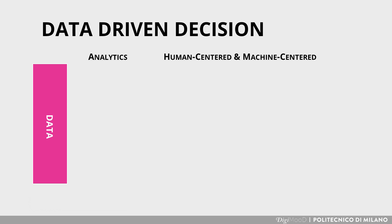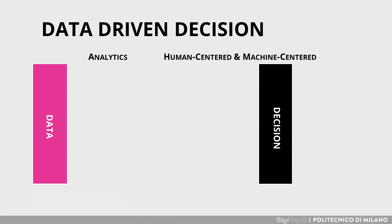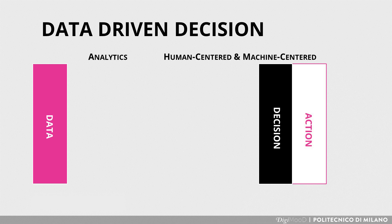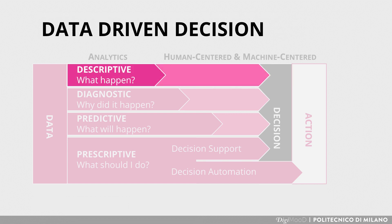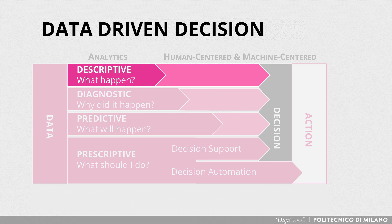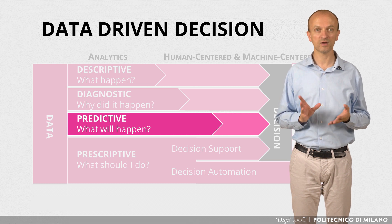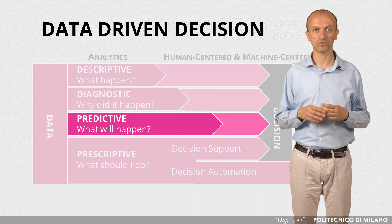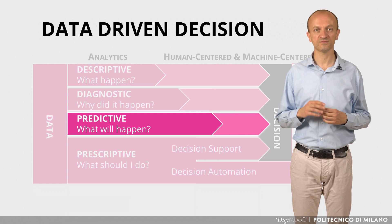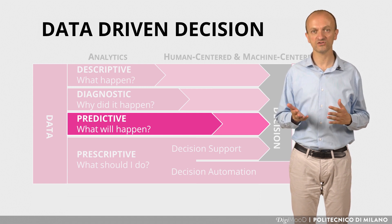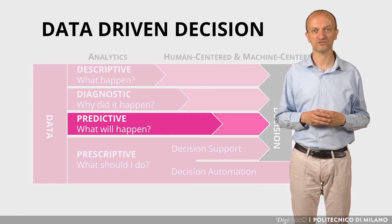Data can allow us to take better decisions, which will result in implementing better actions. Descriptive analytics can help a decision maker to interpret and understand reality. Based on that, he will take more informed decisions. Predictive analytics, instead, tells a human what will happen or what is likely to happen, thus making it easier to take strategic decisions on future directions to take.